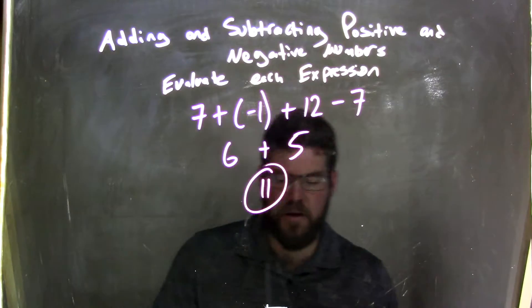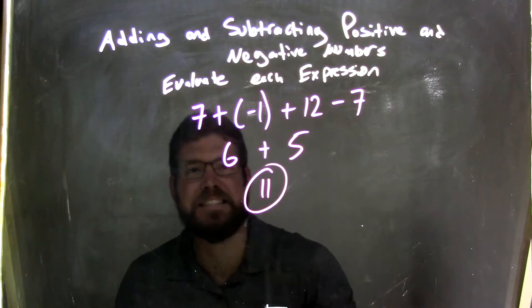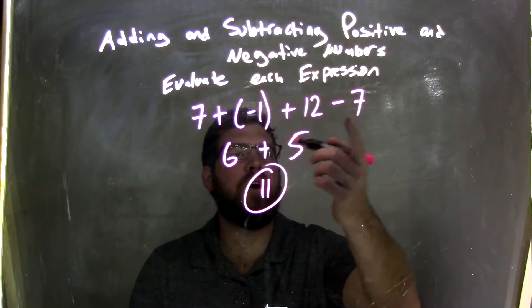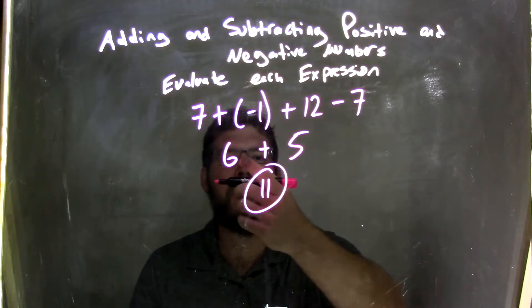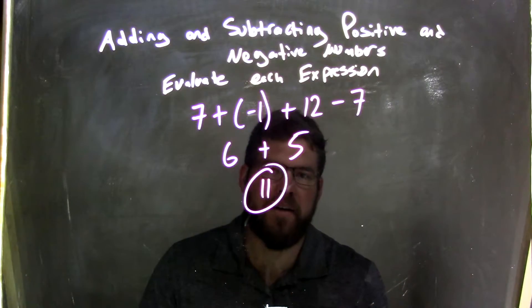And that is our final answer. So again, let's recap. We started with 7 plus a negative 1. 7 plus a negative 1 is 6, right? 7 minus 1 is 6, and then we did the 12 minus 7, which is 5. We then can combine the 6 plus 5, which came out to be 11, which is our final answer. Thank you.